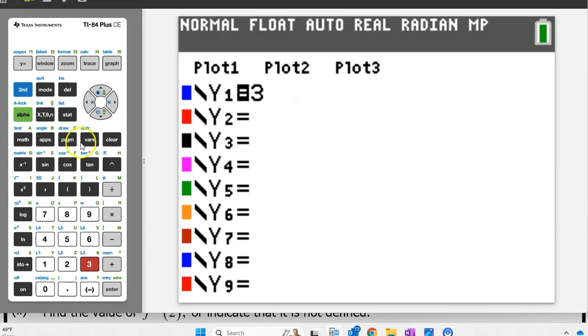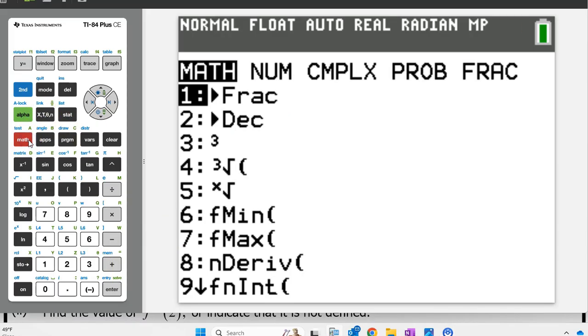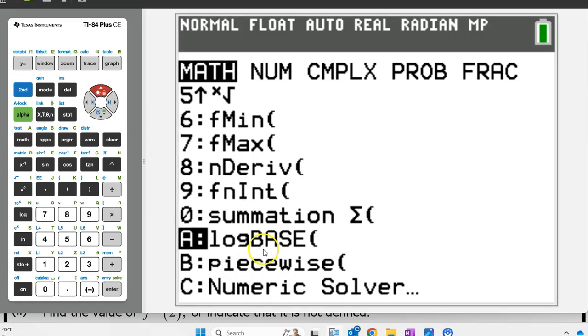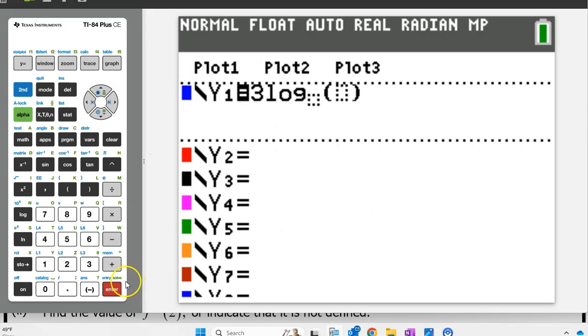Type in the 3 and then hit the math button and you want to scroll up because it's near the bottom and it wraps around. Choose option A that says log base. And now we can enter the 5 and the x.